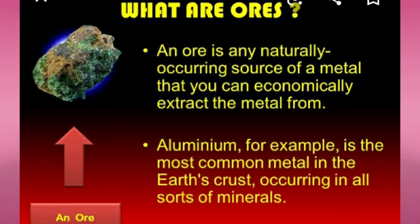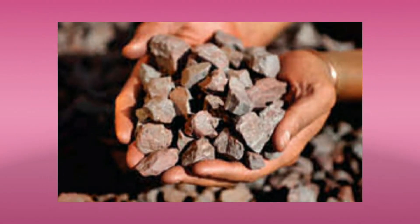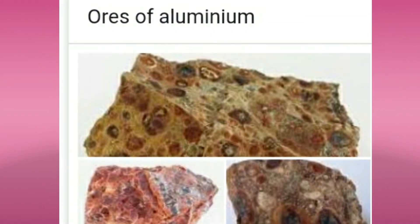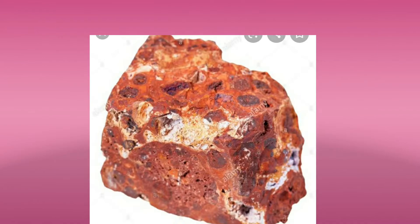An ore is any naturally occurring source of a metal from which we can economically extract the metal. For example, aluminium is the most common metal in the earth's crust, occurring in all sorts of minerals.